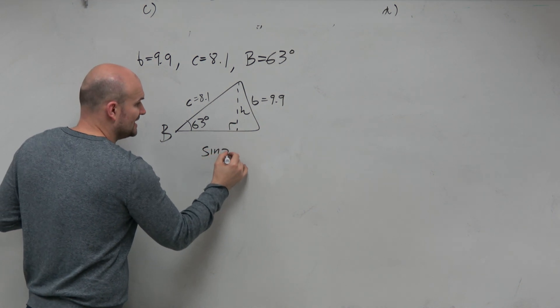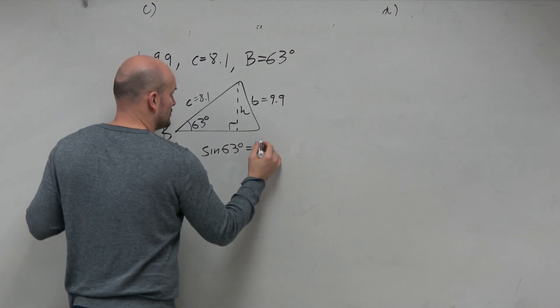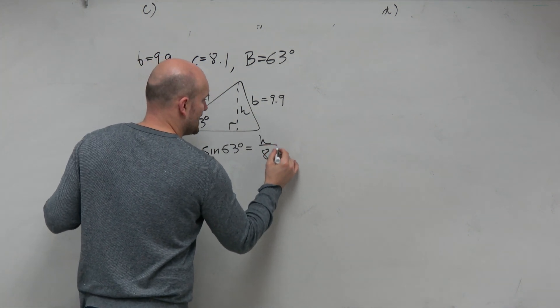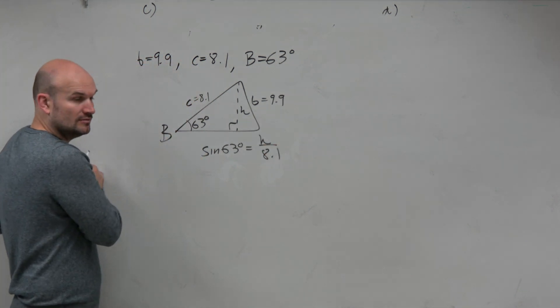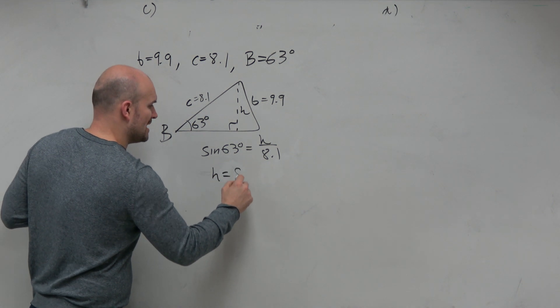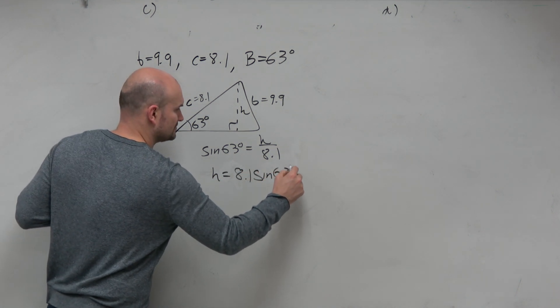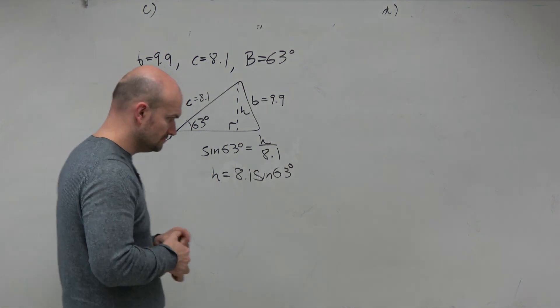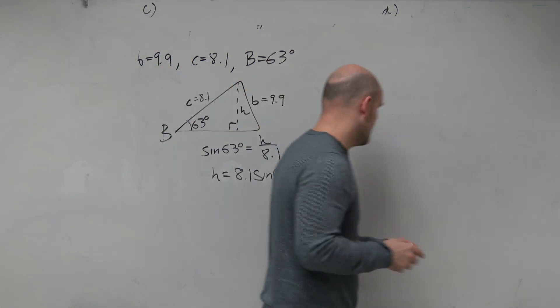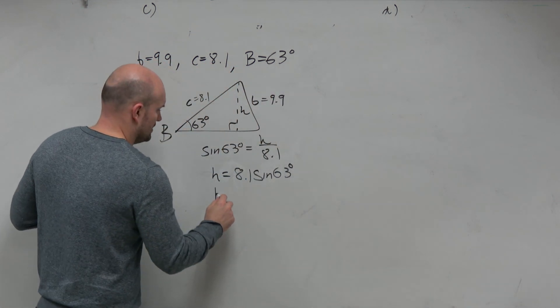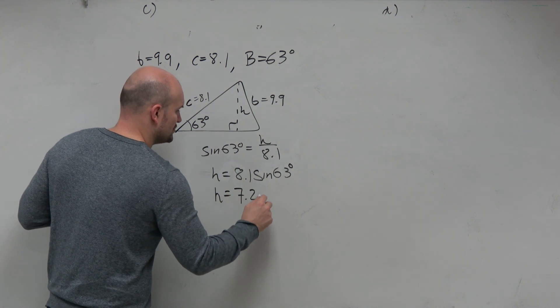I could say the sine of 63 degrees is equal to h over 8.1, right? So therefore, height is equal to 8.1 times the sine of 63 degrees. What is it? 7.217. So h equals 7.217.